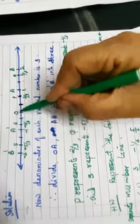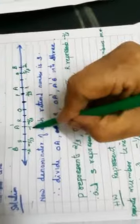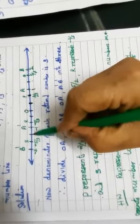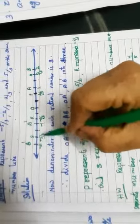Similarly, on the left side, negative 1 by 3, negative 2 by 3, negative 3 by 3 or negative 1, negative 4 by 3, negative 5 by 3, negative 6 by 3 or negative 2 etc.